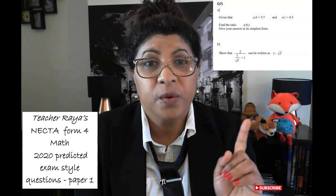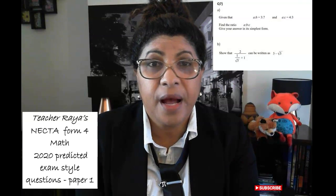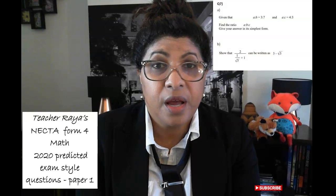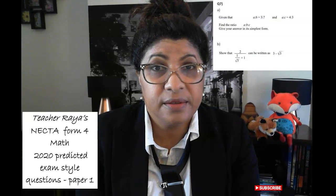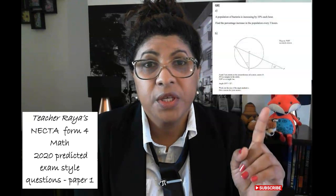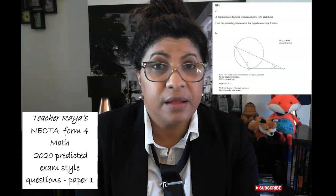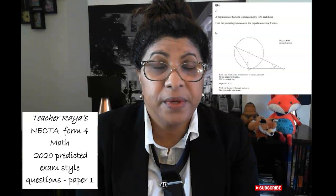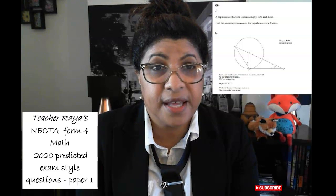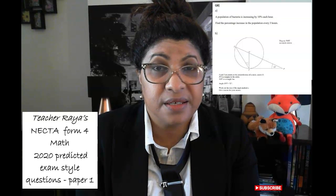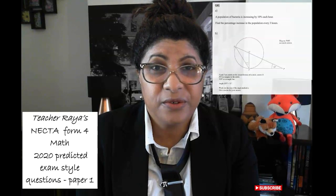Question seven is about ratios and radicals. If you can answer those two topics, you're doing really well — have a go and I'll discuss the solutions at the end. Question eight is about compound interest and a circle theorem, which are very popular topics for Form Four exams. We predict that at least one of those will appear in this year's exam paper.